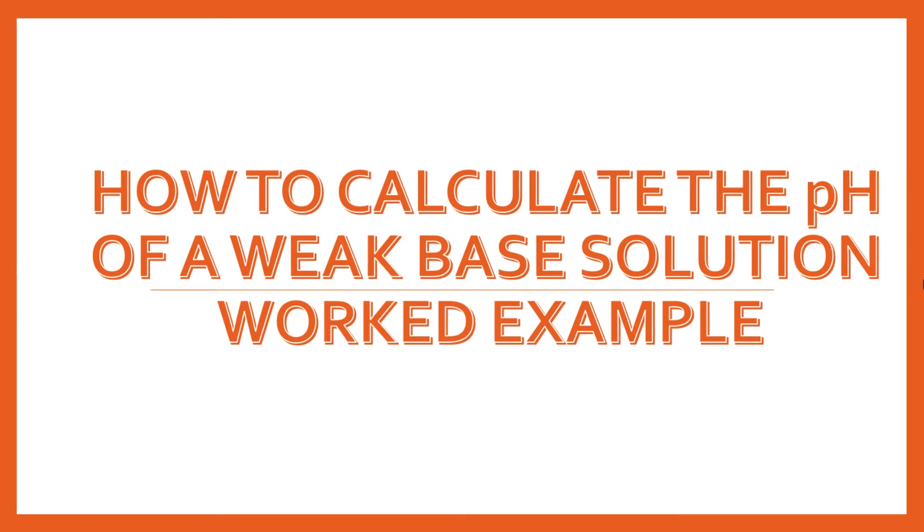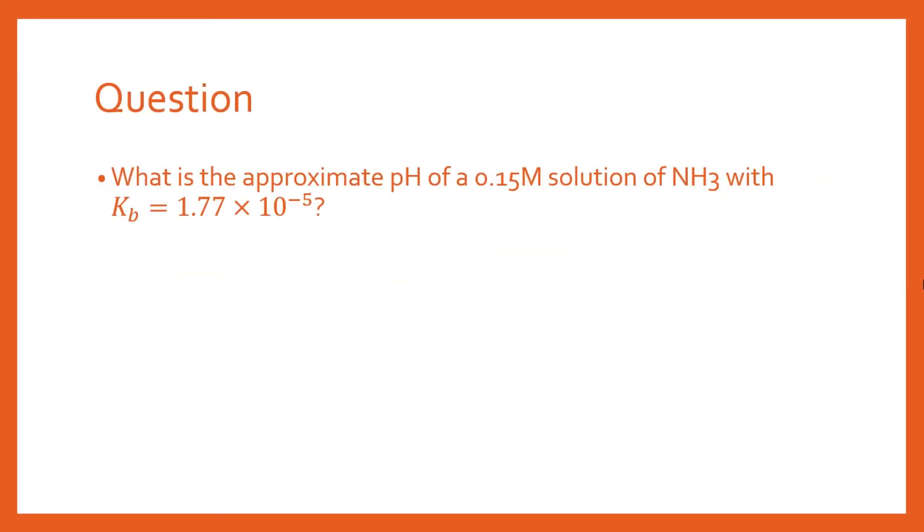In this video I'm going to show you a nice and simple way to calculate the pH of a weak base solution by way of a worked example. Our worked example is: what is the approximate pH of a 0.15 molar solution of NH3 with Kb = 1.77 × 10⁻⁵? Of course you could look up that Kb value.